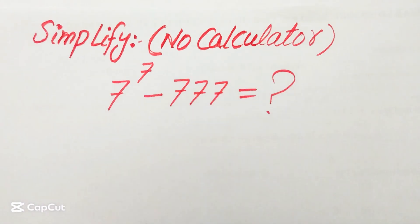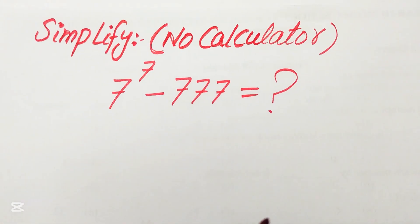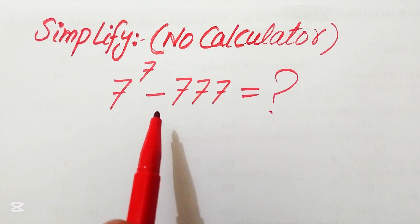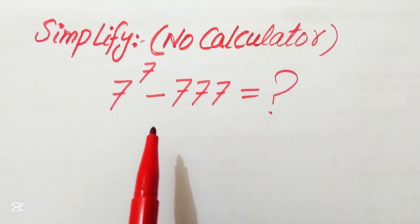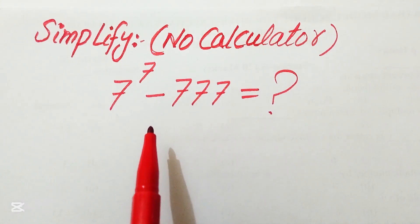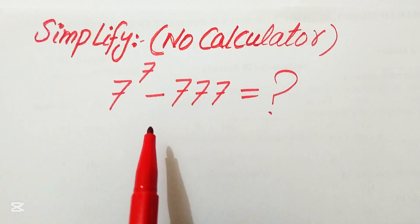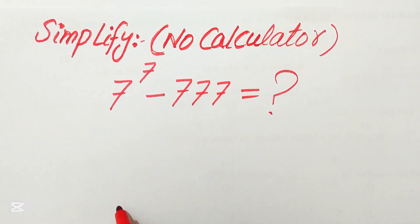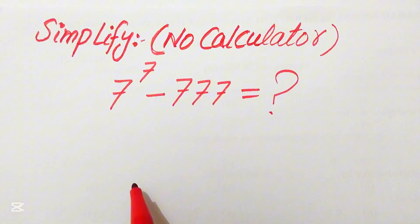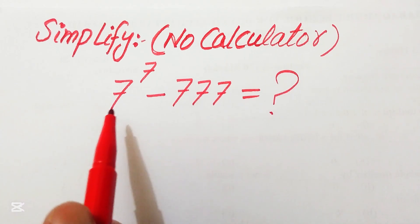Hello everyone. How to simplify this nice algebraic expression: 7 to the power of 7 minus 777. We need to simplify this algebraic expression, and note that a calculator is not allowed in this problem, which means we will show all of the working here.